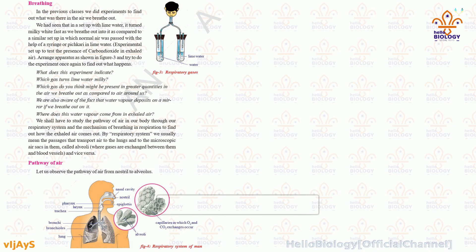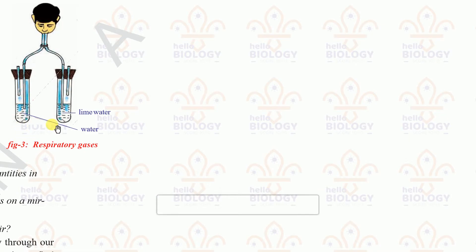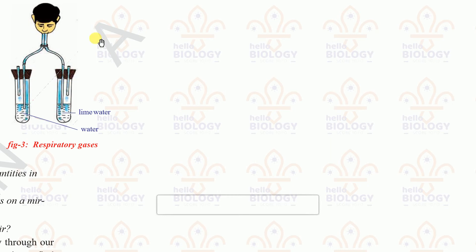We have one experiment here, which you may have seen in lower classes. There are two test tubes with different liquids — one contains lime water and the other contains plain water. Lime water is similar to the white paint used for whitewashing walls and schools. The test tube has two holes: one inlet and one outlet. A rubber cork is fitted, and we blow air through it into both test tubes.